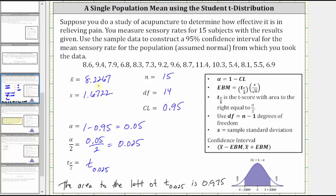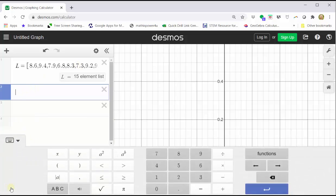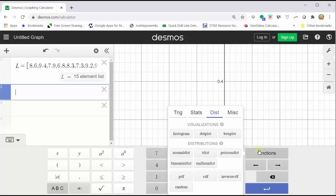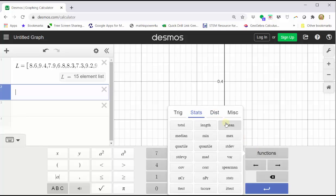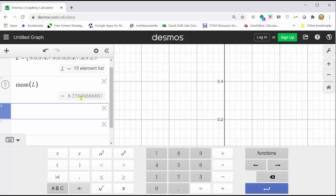Let's also show how to find these using Desmos. I already have the data in a list. To enter a list, assign a variable, enter the data in square brackets. In cell two, let's open the Desmos keypad, click functions, click stats, click mean, enter capital L for the variable for the list. Enter, we get the same mean.